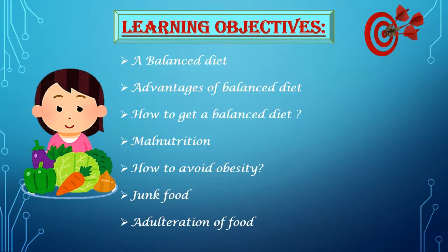Now let us see what are the learning objectives for Module 2. In this module you will be learning about a balanced diet, the advantages of balanced diet, how to get a balanced diet, what is malnutrition, how to avoid obesity, what is junk food, and what is adulteration of food.